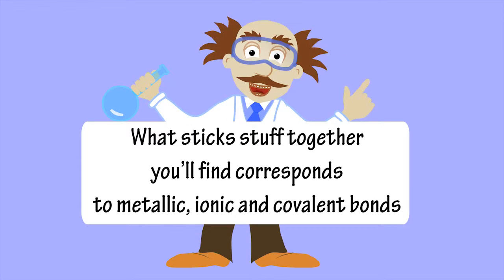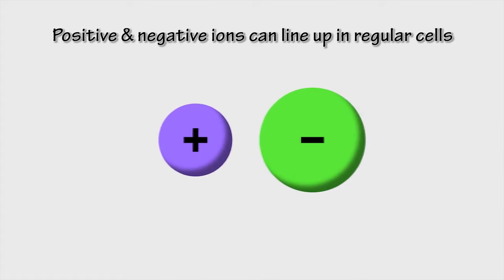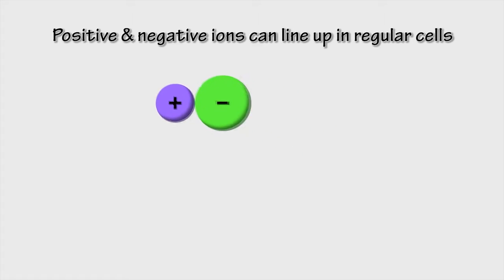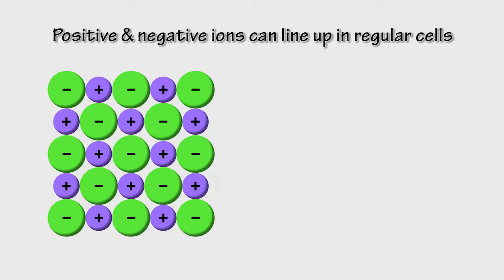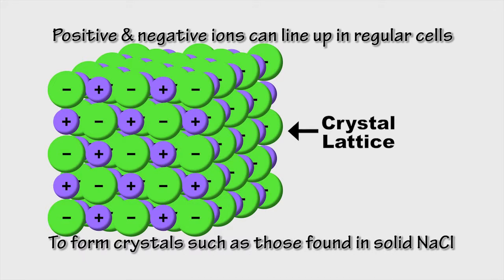Positive and negative ions can line up in regular cells to form crystals such as those found in solid NaCl.